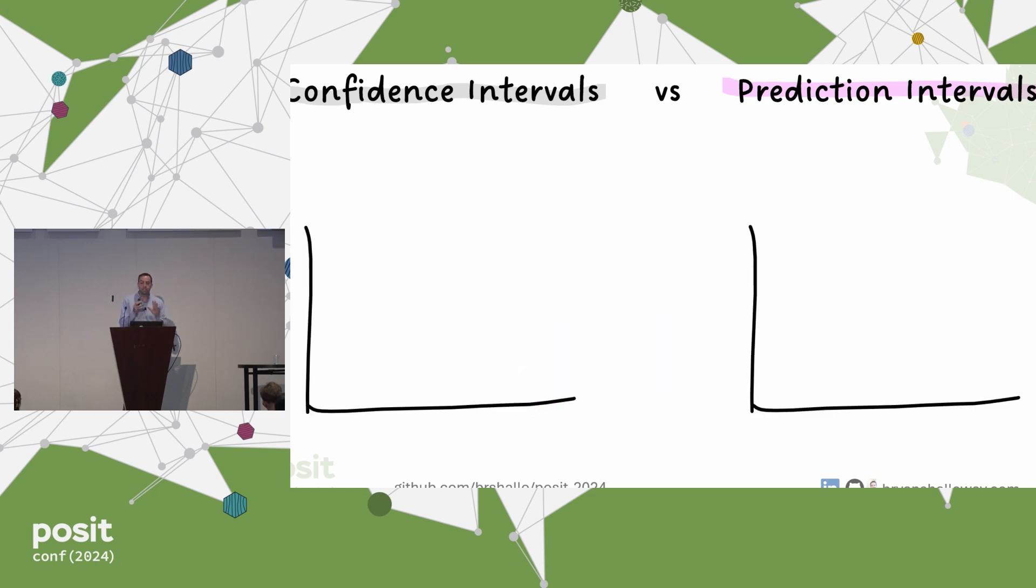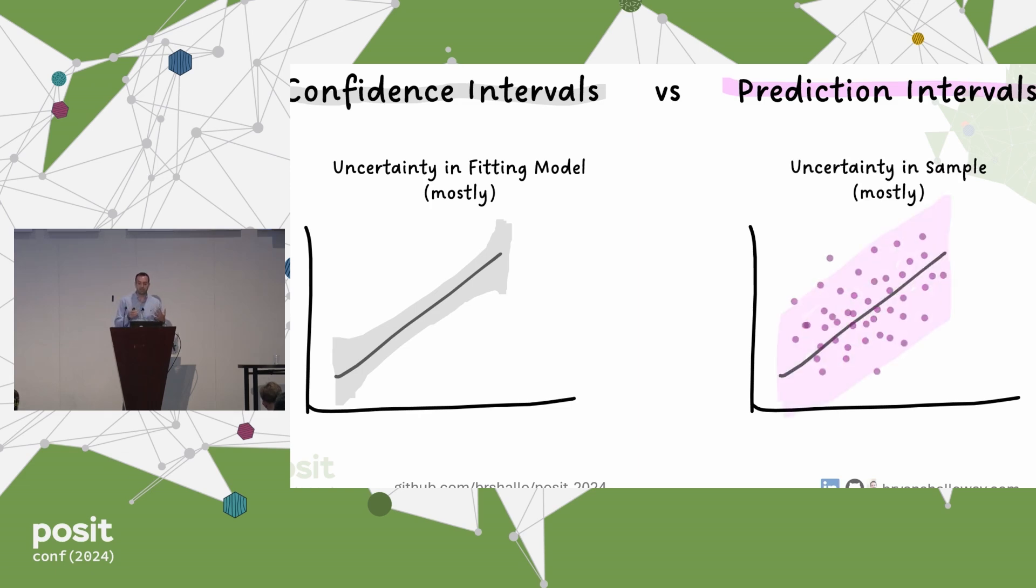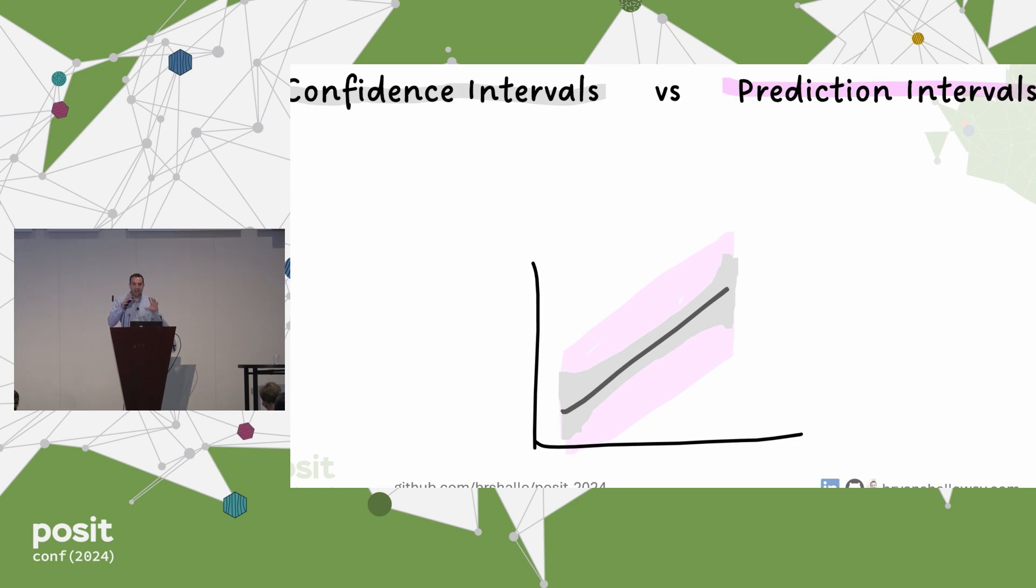Confidence intervals mostly come from uncertainty in fitting the model, and they represent intervals related to the average across the entire population at some point. Confidence intervals are really useful in contexts where you're evaluating coefficients or doing other types of statistical tests. But in our context, we're more interested in prediction intervals. Prediction intervals are driven by uncertainty in the sample and reflect the variability in individual outcomes.